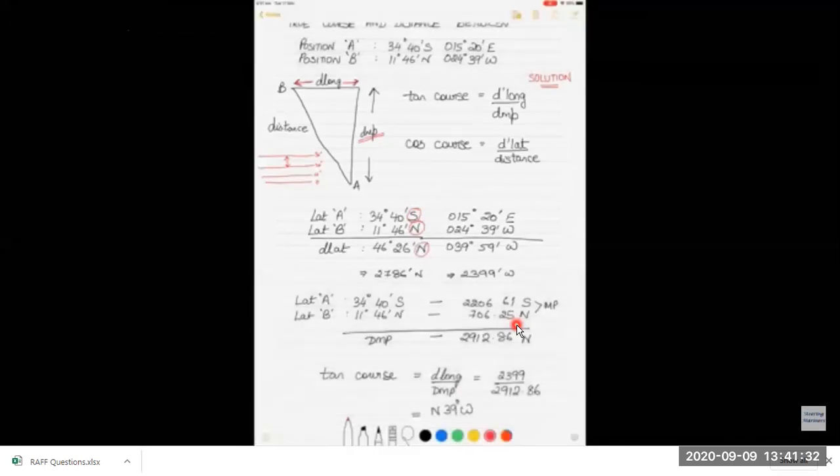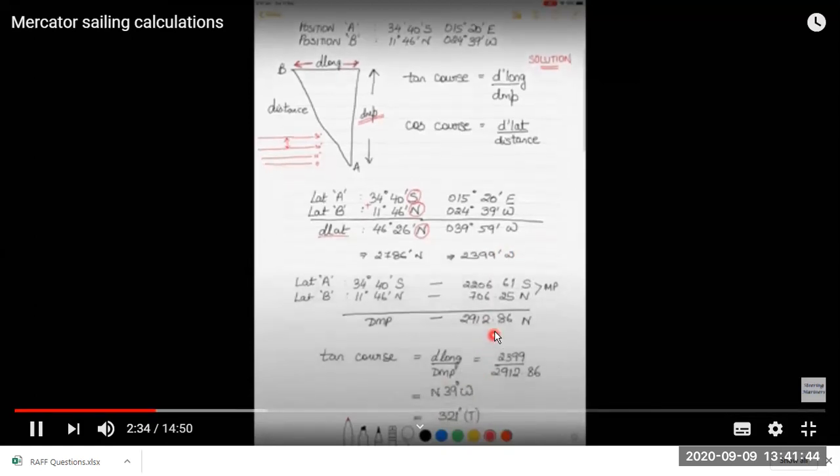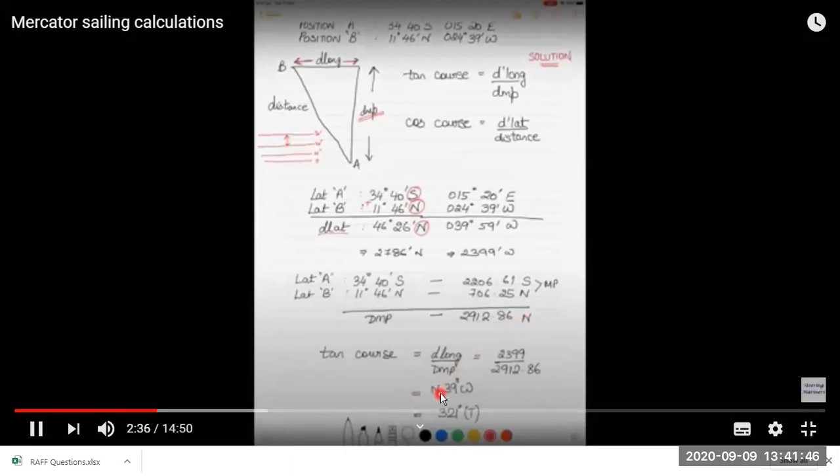The naming we get from here: the d long is west and dmp or the latitude is north. So north 39 degrees west is 321 degrees true. That will be our course, 321 degrees true.